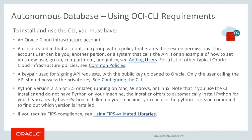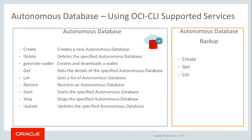The supported Autonomous Database commands using OCI CLI are: Create, to create a new Autonomous Database; Delete, to delete one; Generate Wallet, which creates and downloads a wallet; Get, which gets the details of the specified Autonomous Database; List, which gets a list of Autonomous Databases; Restore, which restores an Autonomous Database; Start and Stop; Update, which updates the specified Autonomous Database; and Backup, which creates, gets, or lists backups.